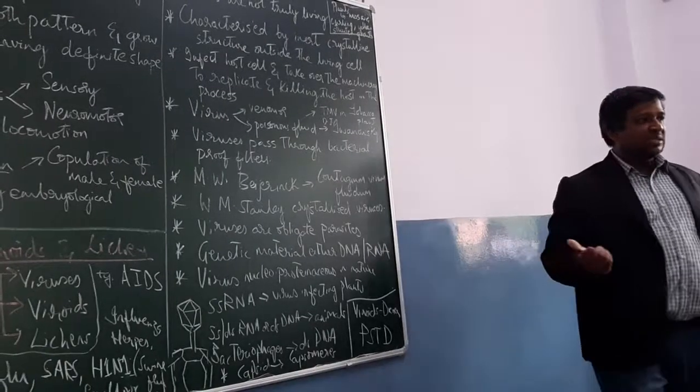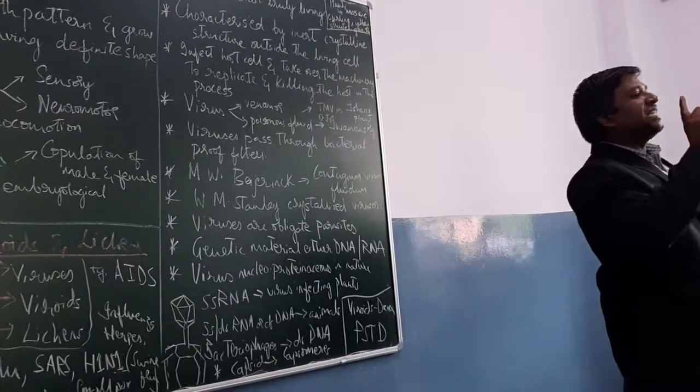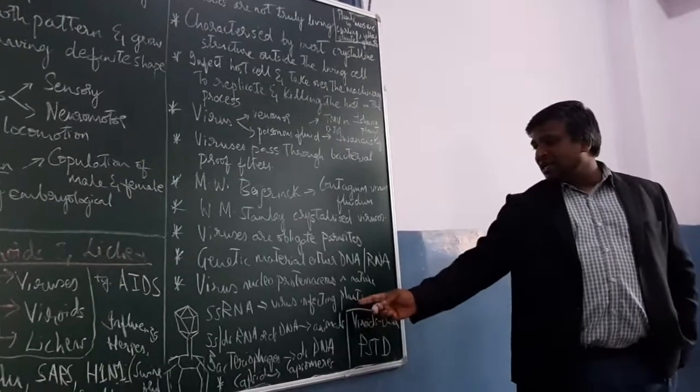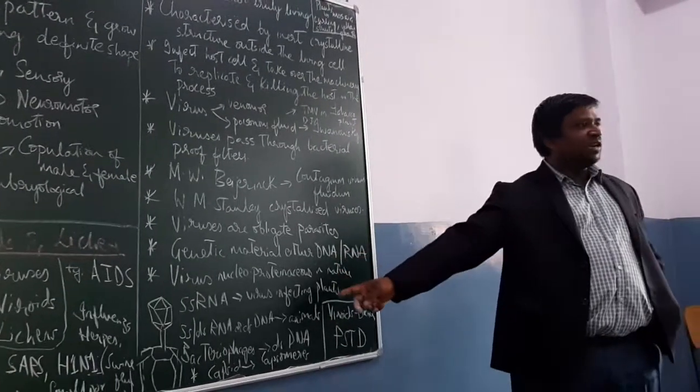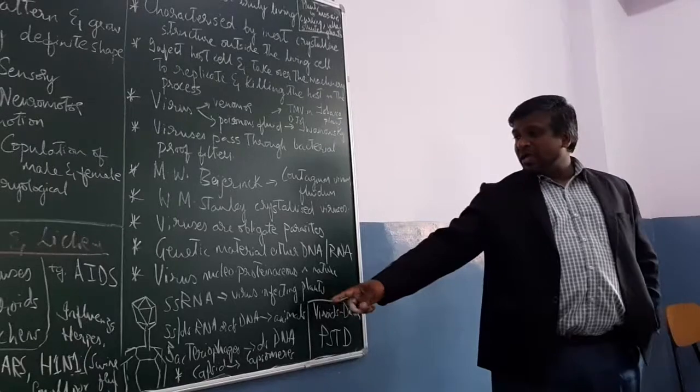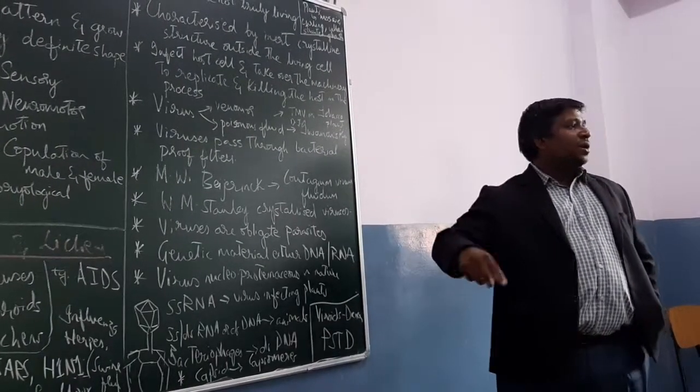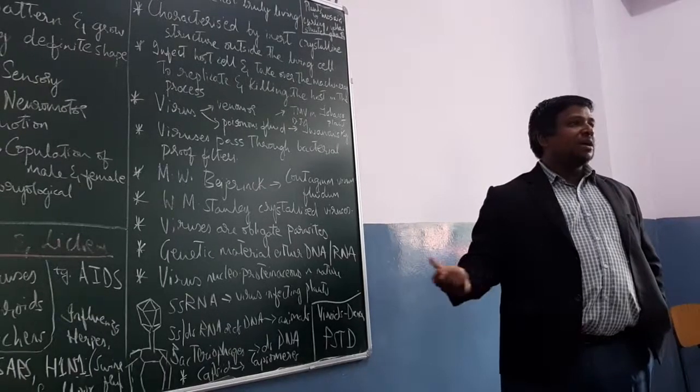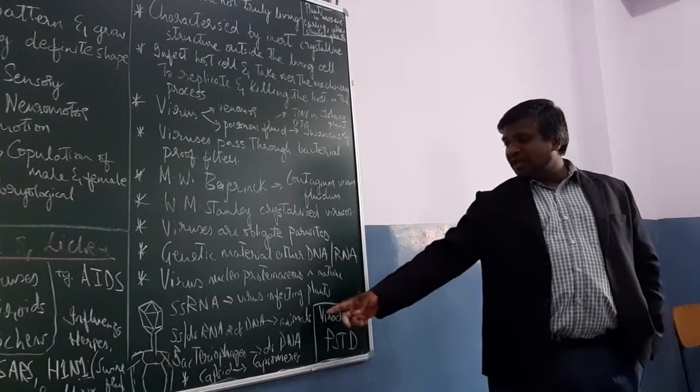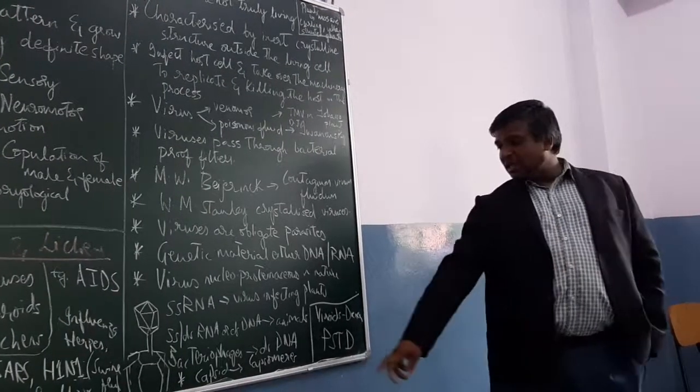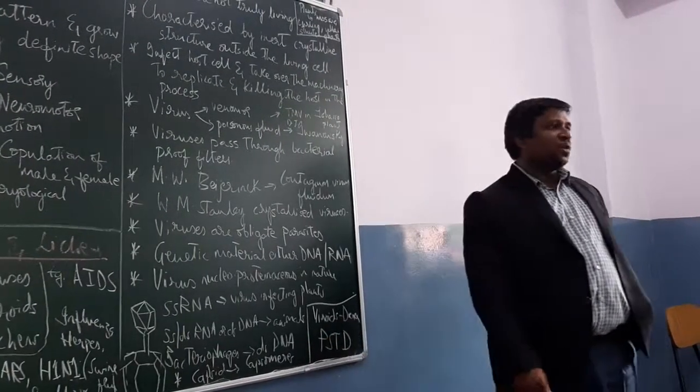Plant viruses have genetic material that might be single-stranded RNA or double-stranded RNA. Single-stranded RNA is predominantly infecting plants. Whereas in case of animals, it can be single-stranded RNA or double-stranded RNA. Bacteriophages are double-stranded DNA.